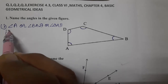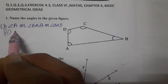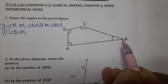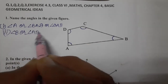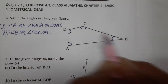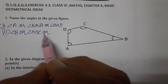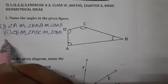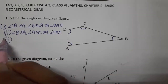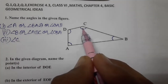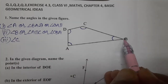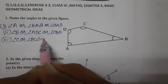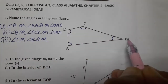Secondly, angle B can be written as angle B, angle ABC, or angle CBA. Then the third one: angle C can be written as angle C, angle BCD, or angle DCB.